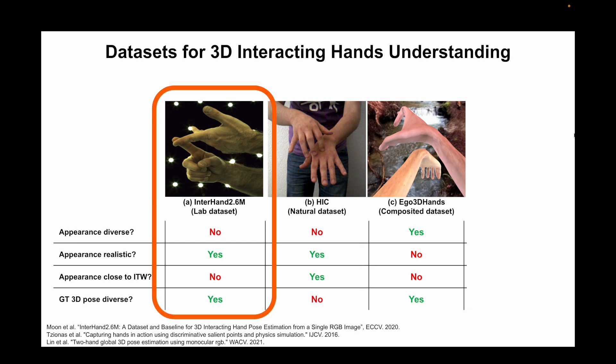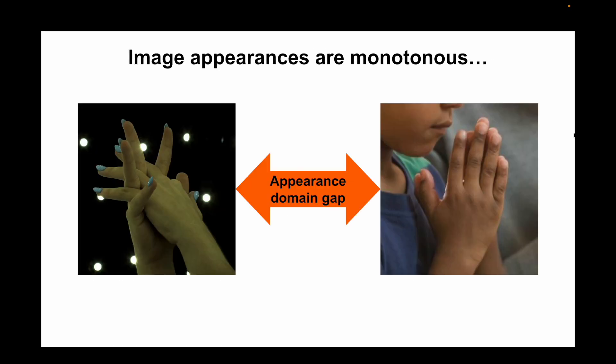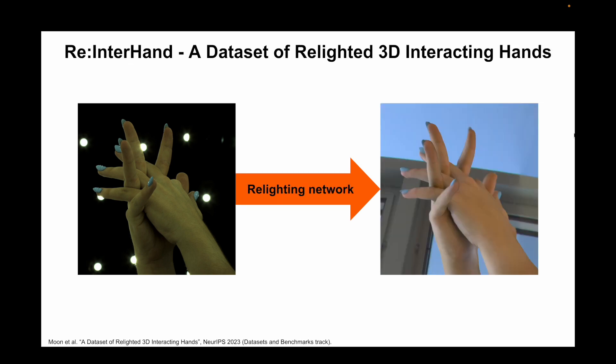Due to its large scale and diverse 3D ground truth, InterHand 2.6M has been widely used by the community. Although it made a breakthrough in the 3D hand community, one problem is that its image appearances are far from those of real indoor-outdoor images. To address this image appearance domain gap, we present our dataset, Re-InterHand, which consists of relit images of interacting hands, captured in a constrained studio.